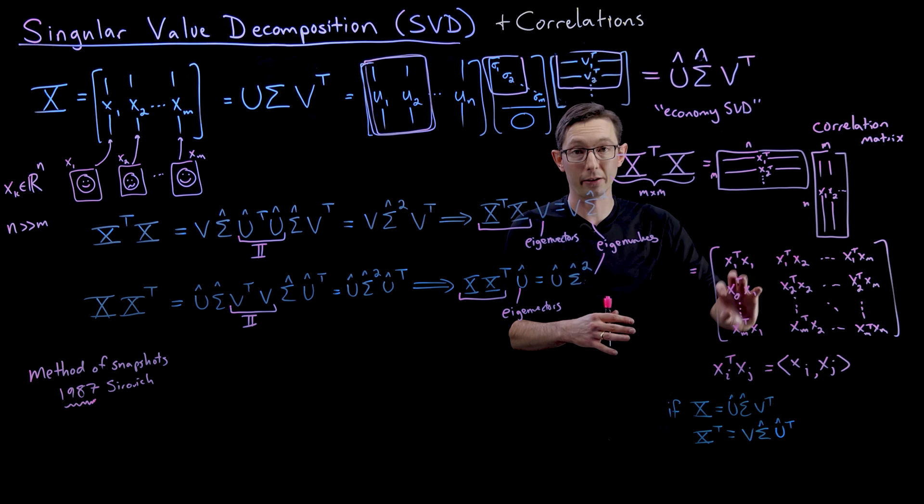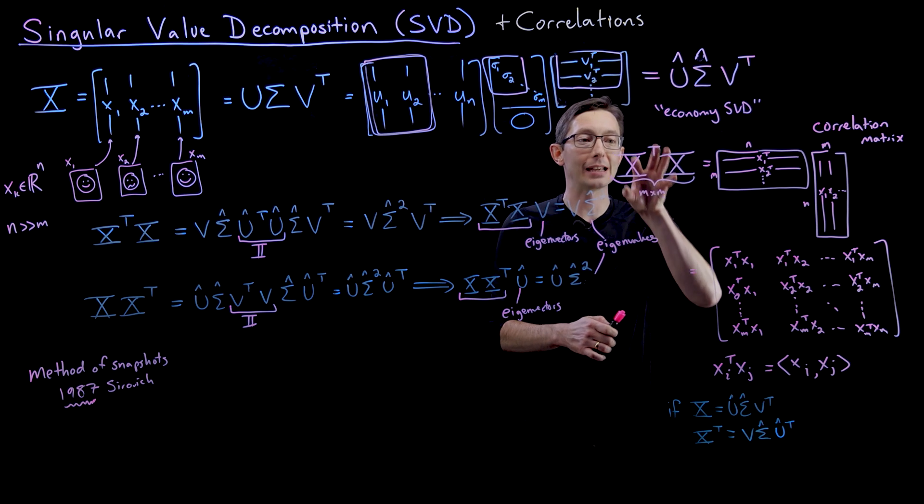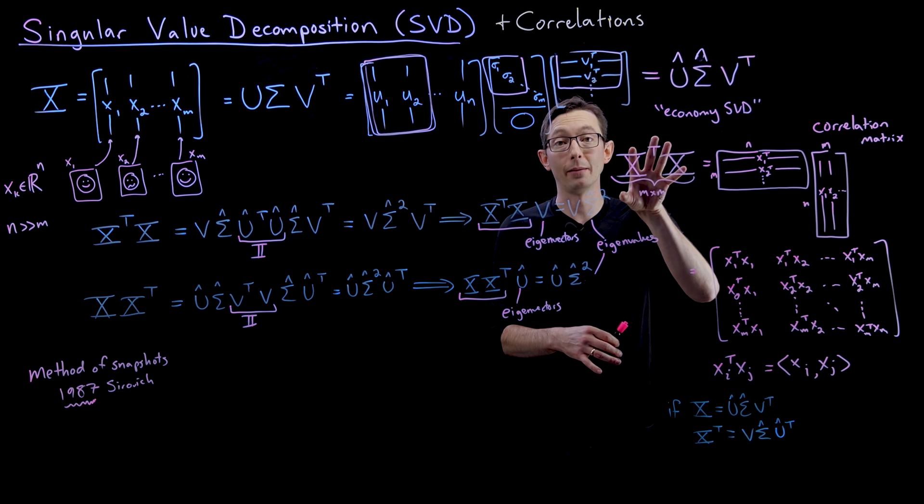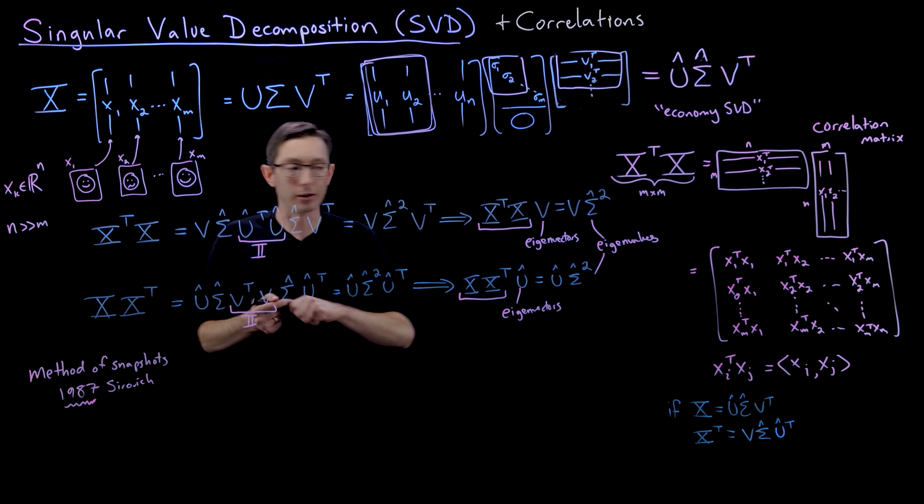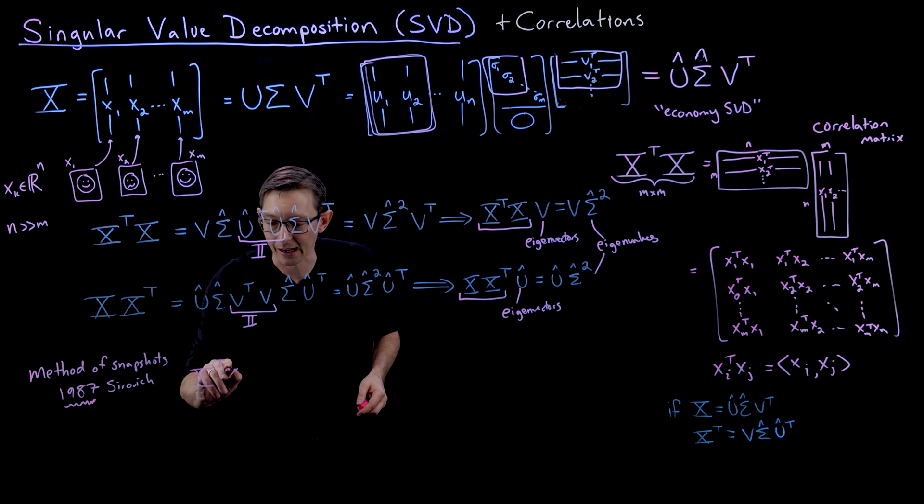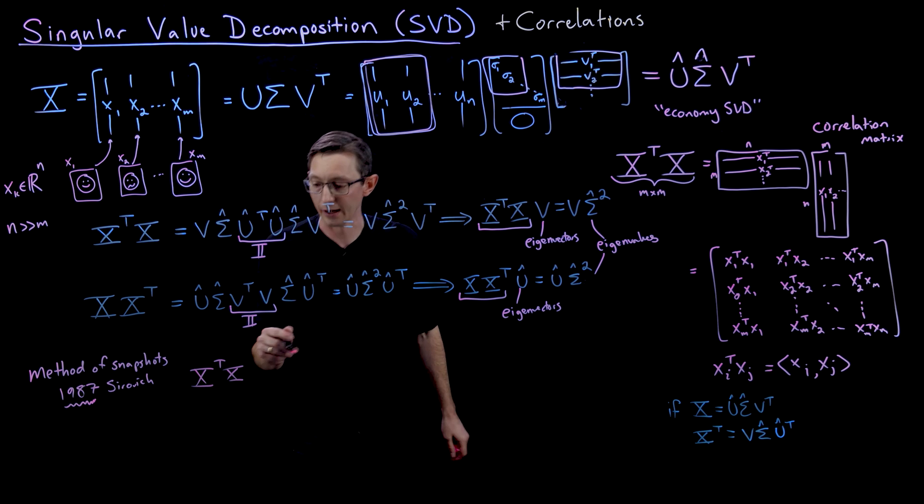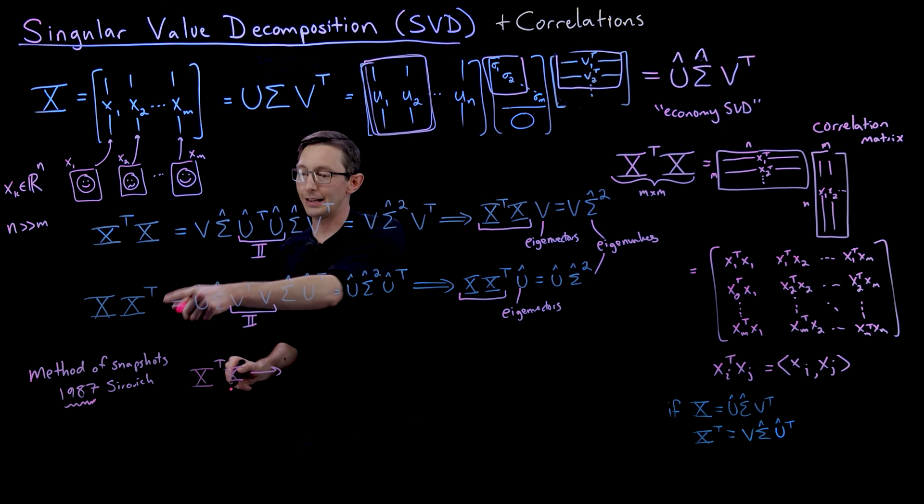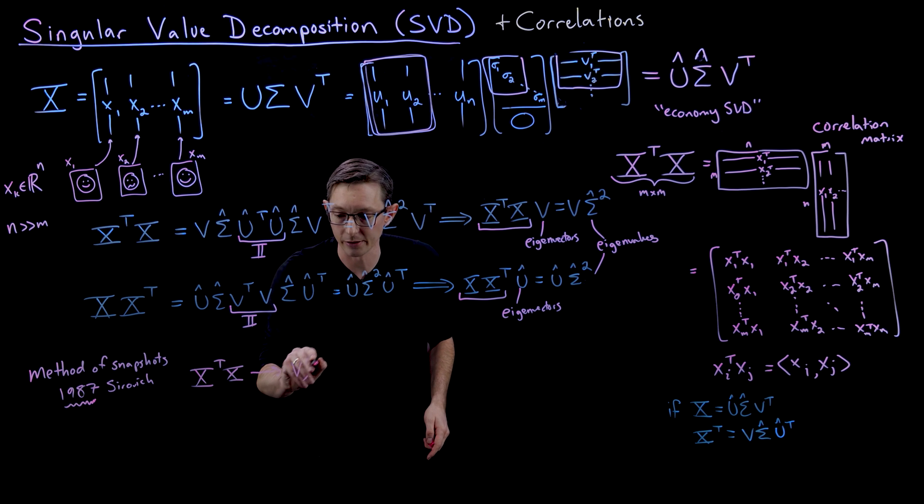It'll be very time-consuming and slow, but you can build this by loading two vectors at a time and computing their inner products. The resulting little m by m matrix is small enough that you can put it in memory and compute its eigen decomposition. If the data is so large, you compute X transpose X element by element, two vectors at a time, and use that decomposition to get your V and your Sigma hat.